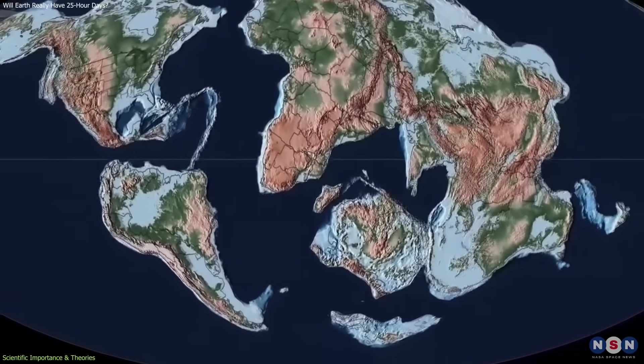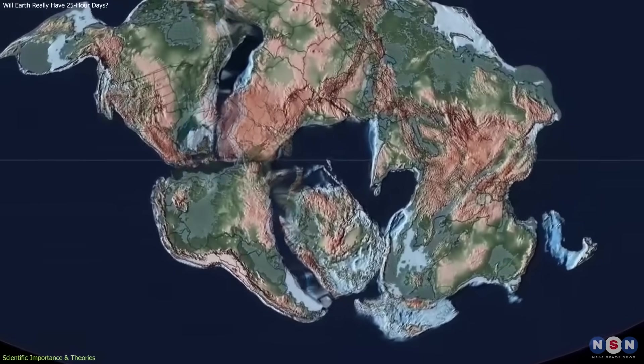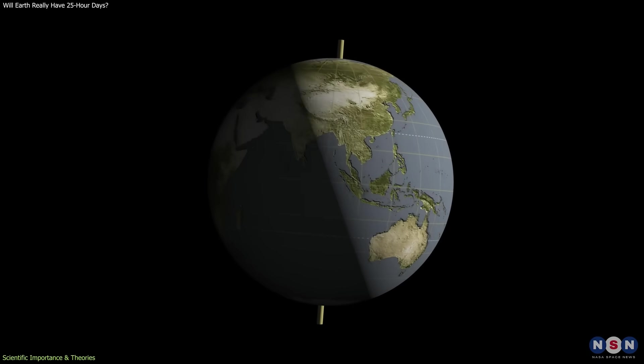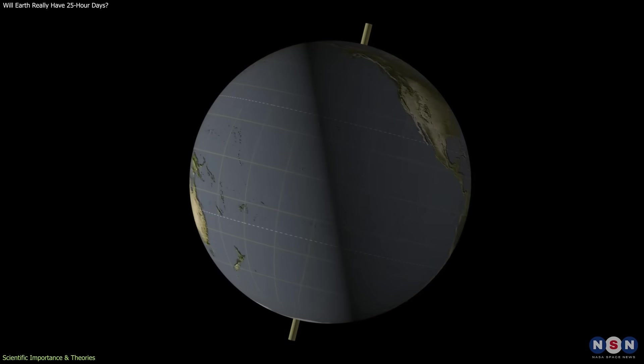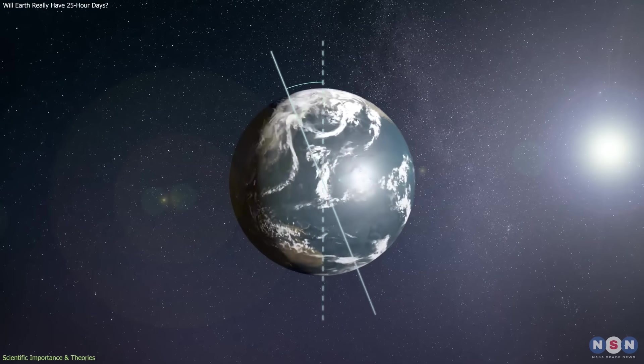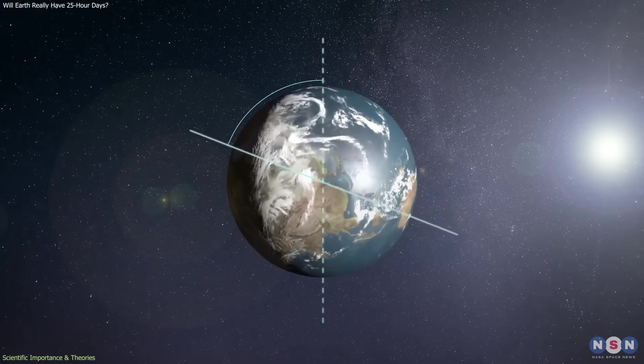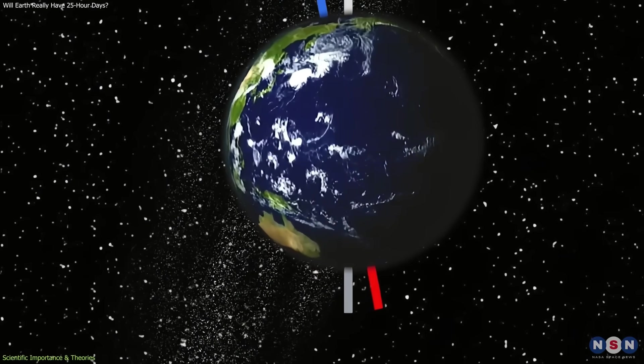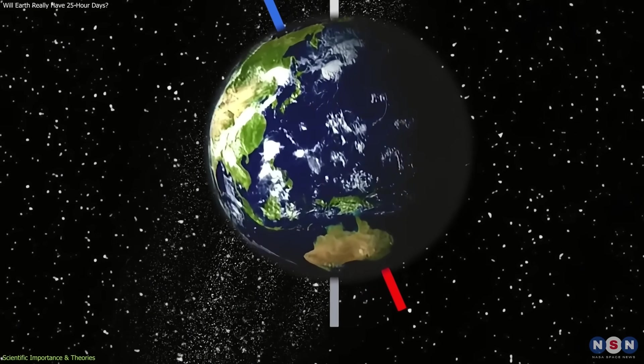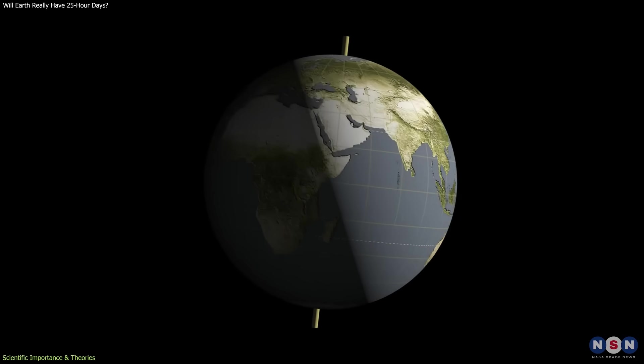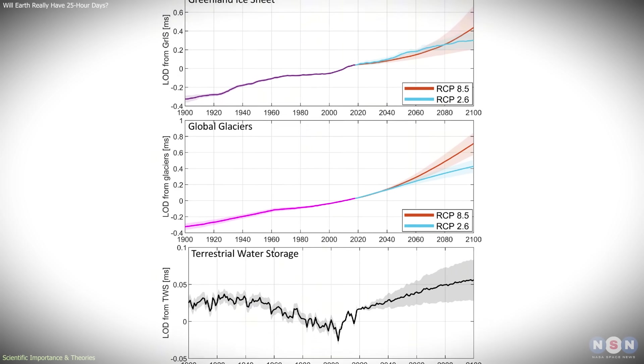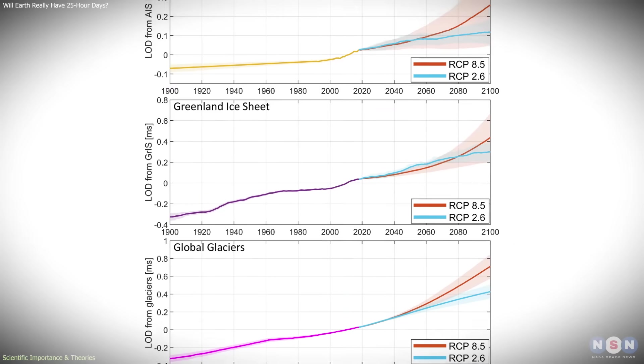Another important effect of mass redistribution is polar motion. As Earth's mass balance changes, the rotational axis shifts slightly relative to the planet's surface. This does not mean Earth is tipping over or becoming unstable. The changes are measured in meters over years and are part of Earth's natural behavior. Some components of this motion are cyclical, while others show long-term drift linked to changes in ice and water storage.